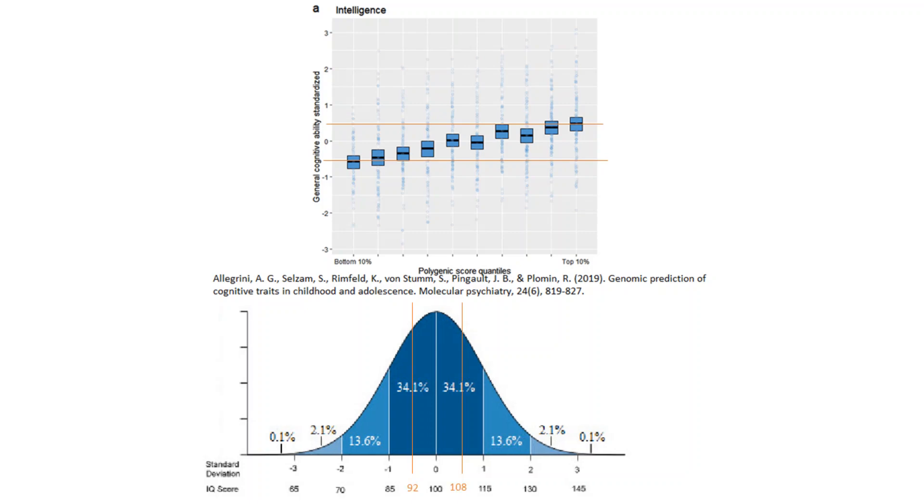By comparing this to the distribution of IQ scores, we can see that this is equal to a mean IQ of about 108 at the highest decile and a mean IQ of 92 at the lowest decile.